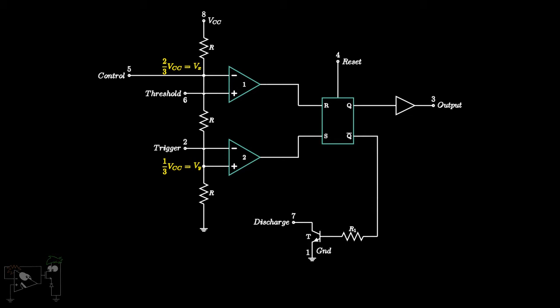Vx is given as a reference to the first comparator and Vy is given as reference to the second comparator. The other inputs of the comparators are from pin 2 and pin 6. Pin 2 is known as the trigger pin and pin 6 is known as the threshold pin.